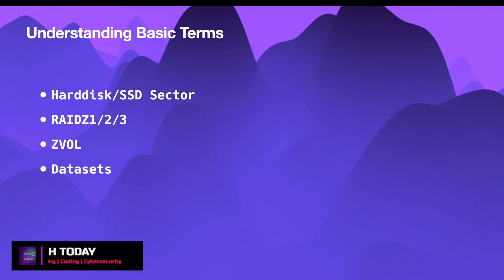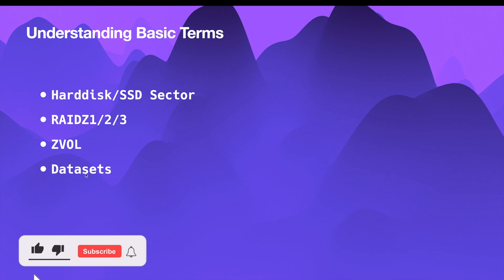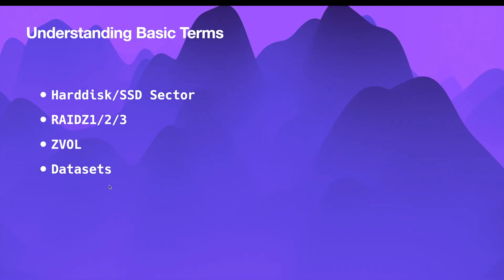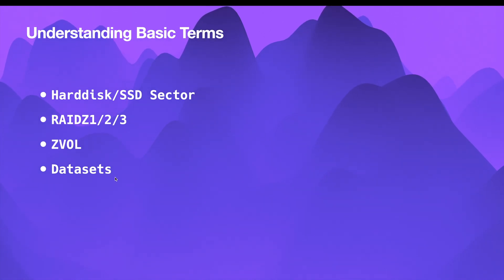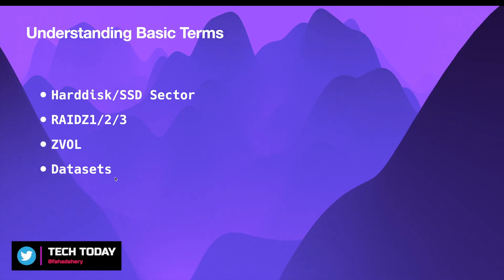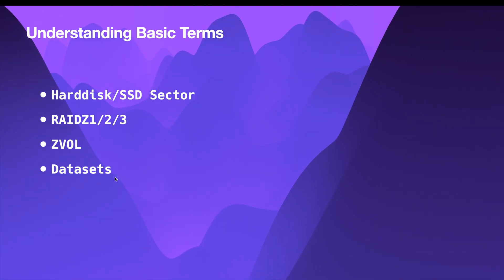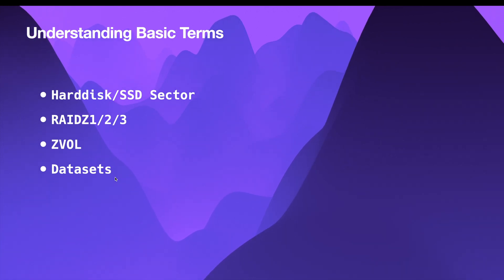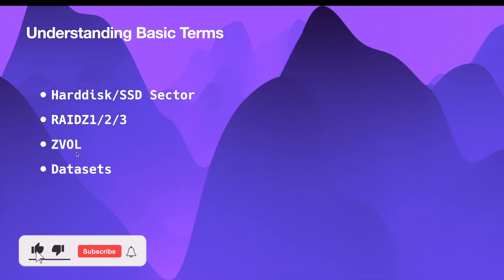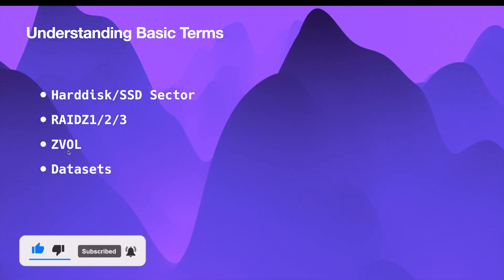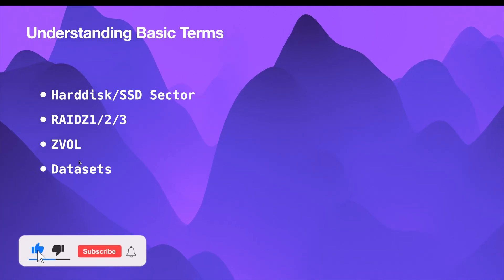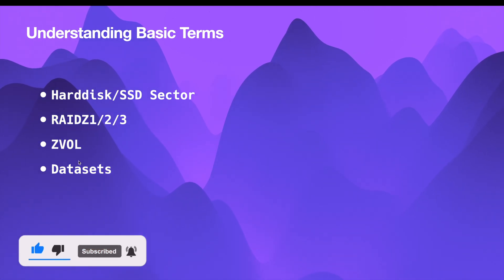A ZVOL and a dataset — let me discuss them together. ZVOLs are block storage, whereas datasets are file systems. ZVOLs are typically used with iSCSI and you can pass them to a VM, which will treat it as if a physical drive is attached. A dataset is typically used with Samba or NFS shares — you mount the dataset in a VM like a network drive because it's a file system. There is another big difference: if you're using ZVOLs, there will be something called a padding overhead — a hidden cost — because you'll be using something called a volblocksize, which affects both performance and storage usage.